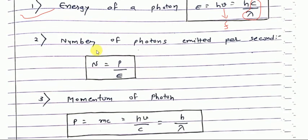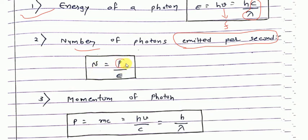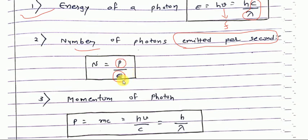Next, a very important formula concept to recall: number of photons emitted per second. उसके लिए simple formula है n = P/E — that is, number of photons equals power divided by energy. Numerator में power है और denominator में E value है। जब भी आपको photon की number find करनी हो, इन दो terms को include करना होगा।